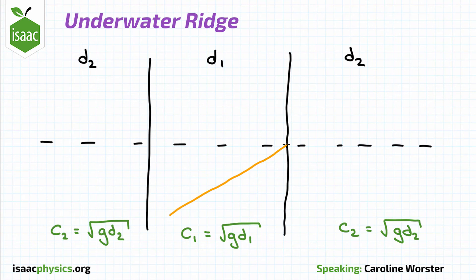For a wave travelling across the ridge, we can find the minimum angle theta by considering the critical angle theta c, which gives an angle of refraction of 90 degrees.